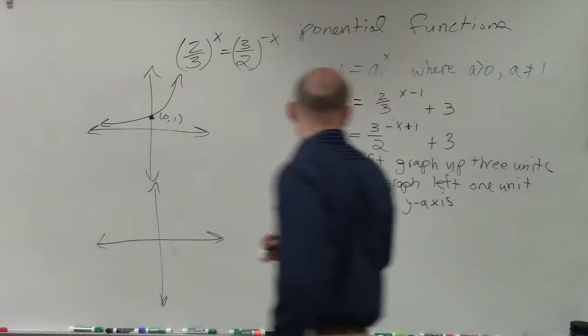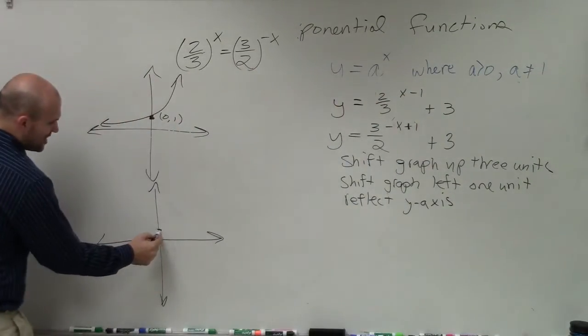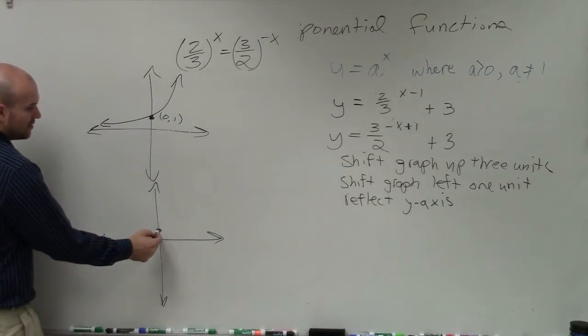So I shift the graph three units up. So instead of it crossing at 0 comma 1, it now crosses at 1, 2, 3, 0 comma 4.